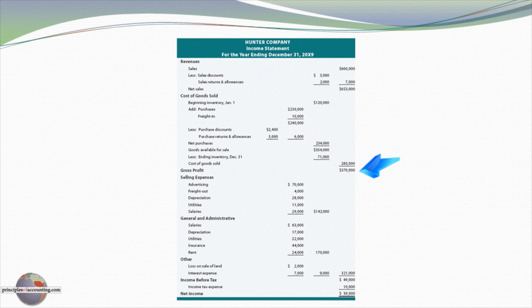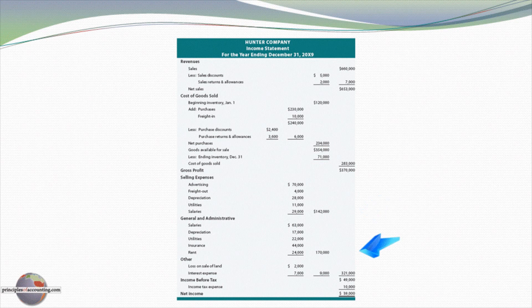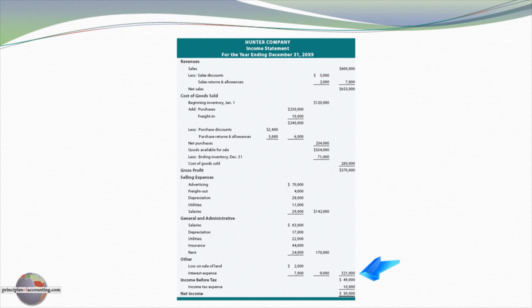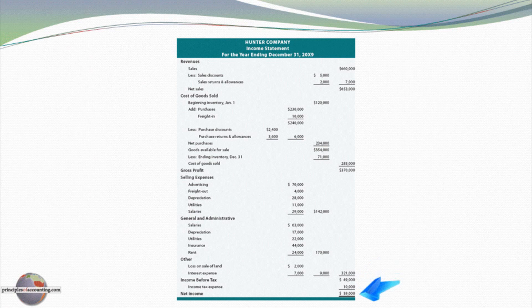The net sales minus the cost of goods sold gives gross profit, from which we subtract our selling expenses and our administrative expenses. We have other items like a land sale, and interest expense shown below, and then we come down and show our income tax, and finally our net income.